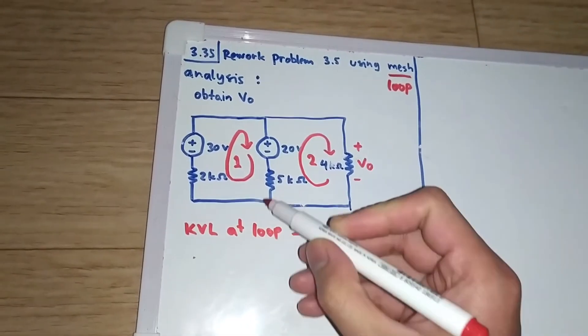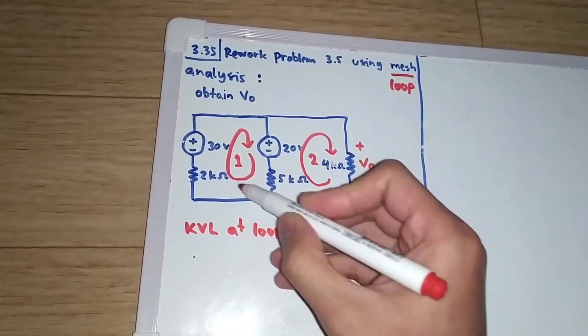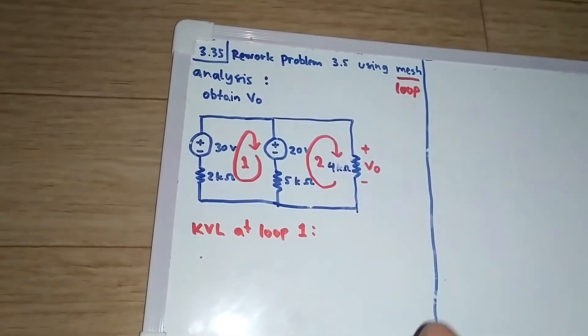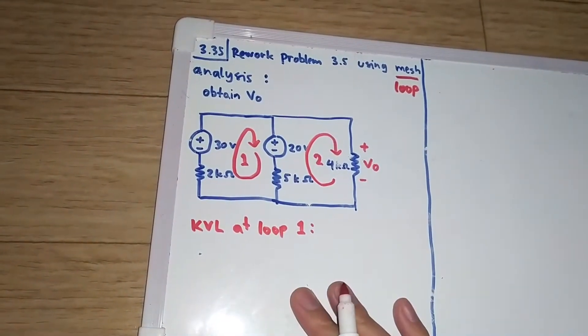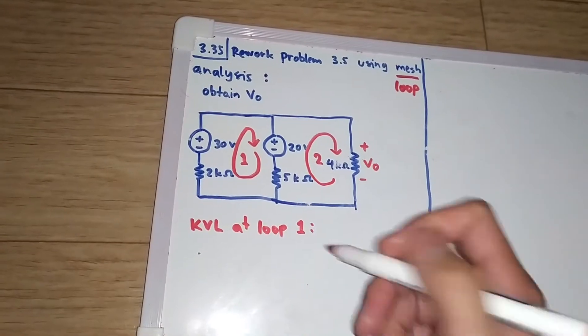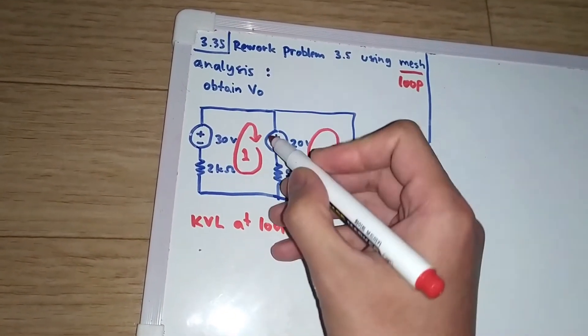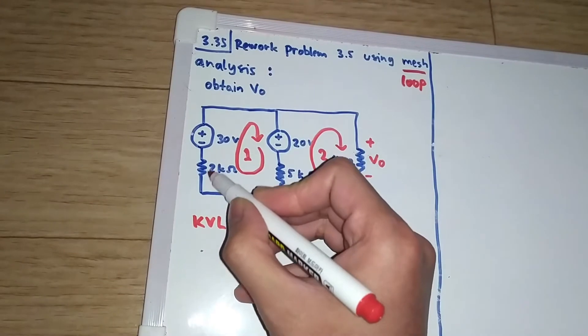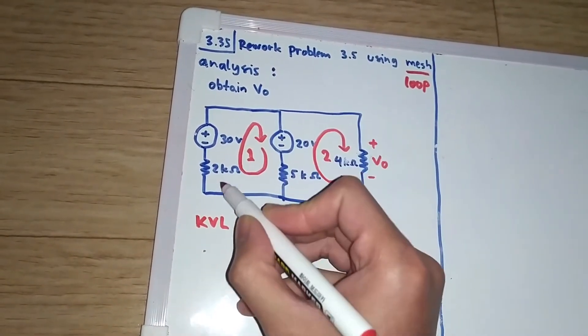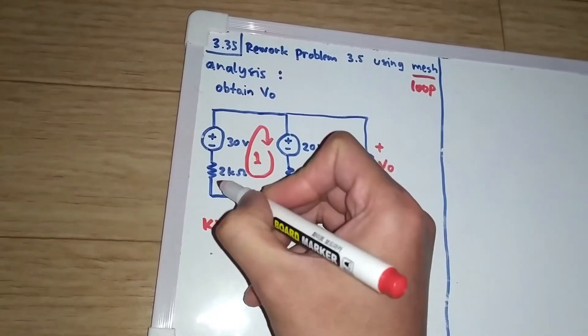We will be using KVL, not KCL, KVL at loop 1. KVL says that the sum of the voltage at this loop is zero. So we start by looking at loop 1, and we will look at this part of the circuit.